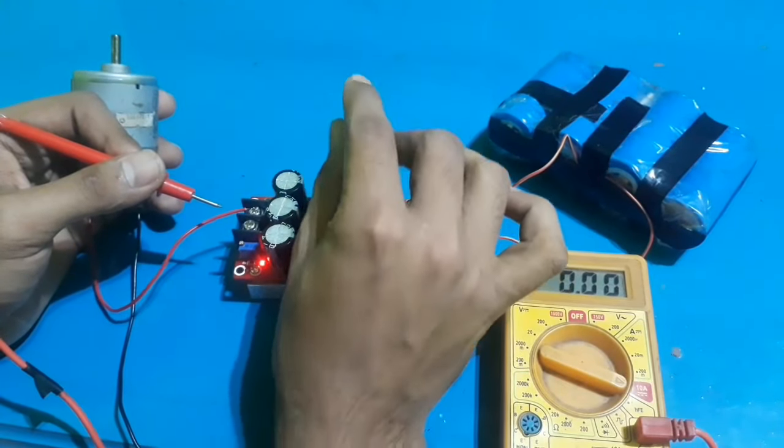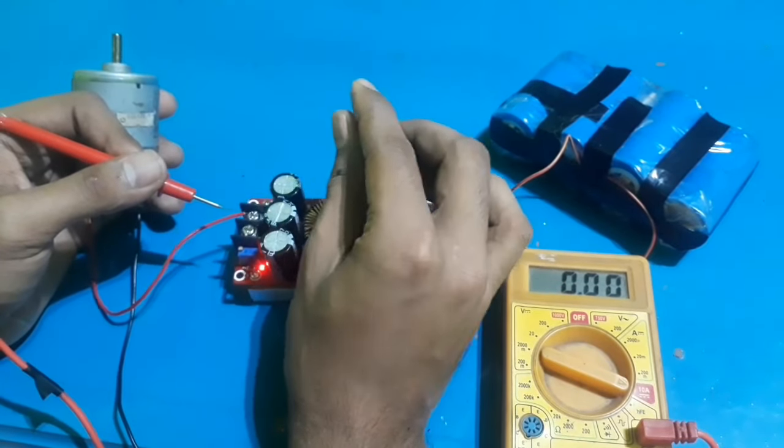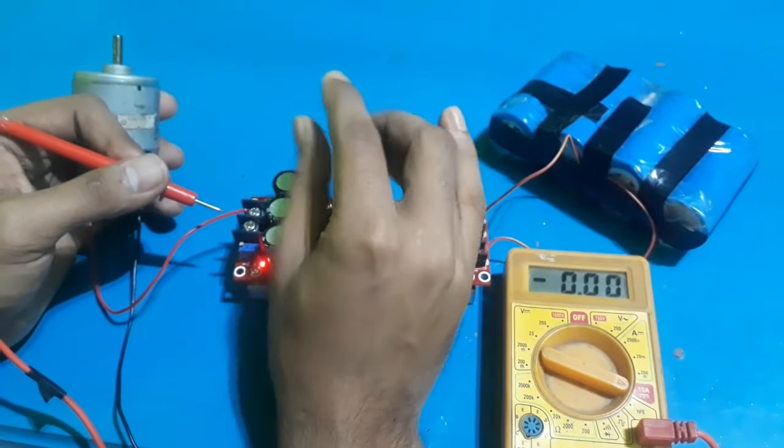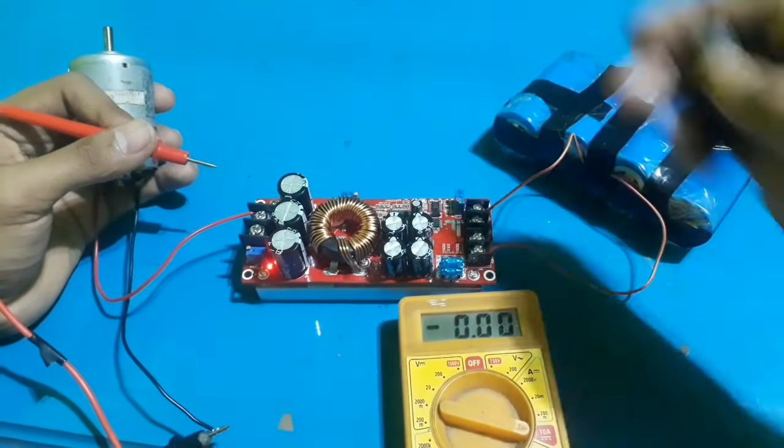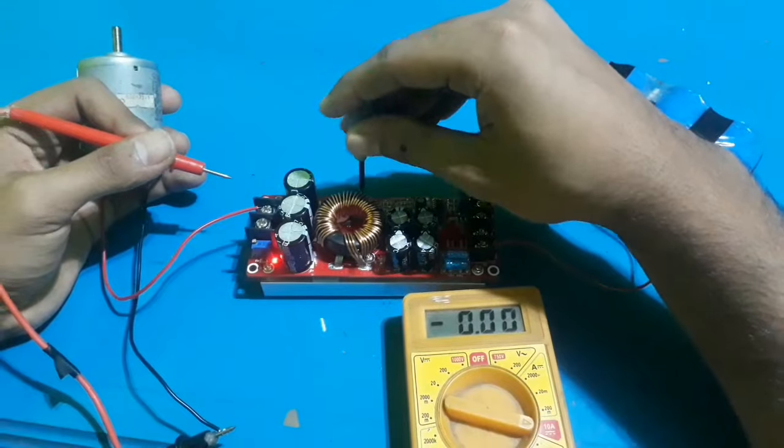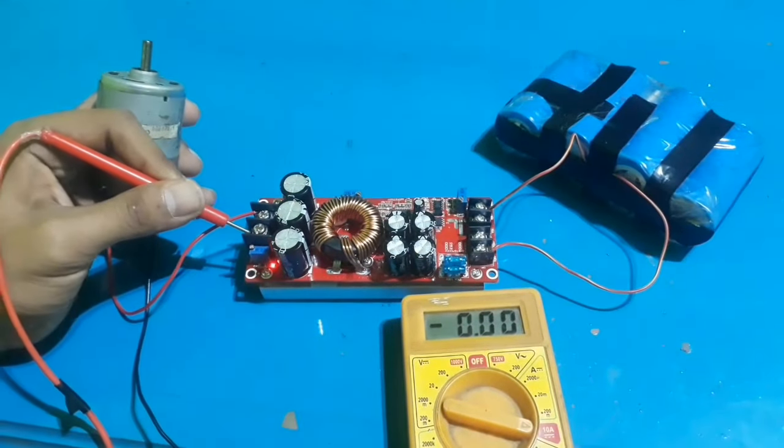Now I'm rotating the rheostat clockwise maximum to the limit to decrease the output current. When you get a click-click sound, then it is the maximum limit and you should not rotate more.